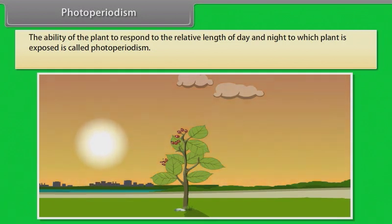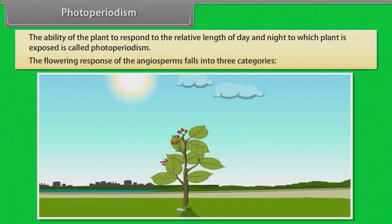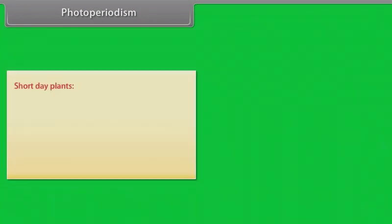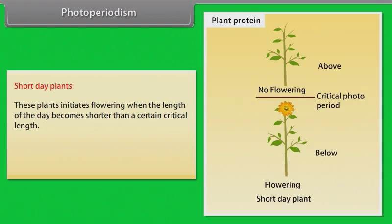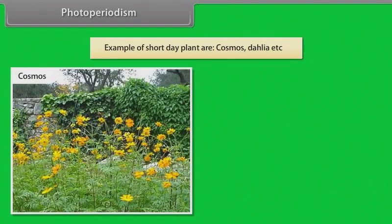Photoperiodism. The ability of plants to respond to the relative length of day and night to which the plant is exposed is called photoperiodism. The flowering response of the angiosperms falls into three categories. Short day plants. These plants initiate flowering when the length of the day becomes shorter than a certain critical length. If these plants expose for the length greater than the critical length then they will remain vegetative. Example of short day plants are cosmos, dahlia etc.